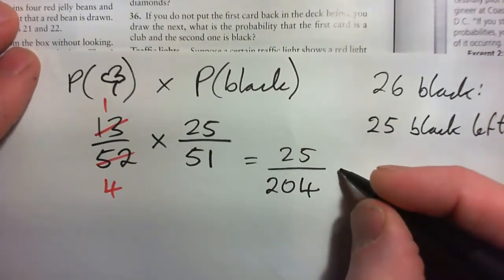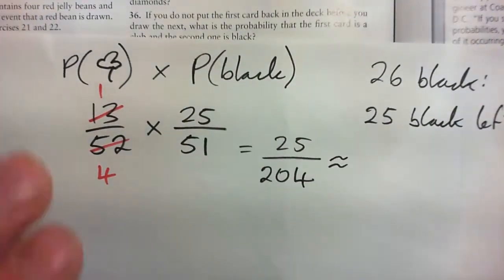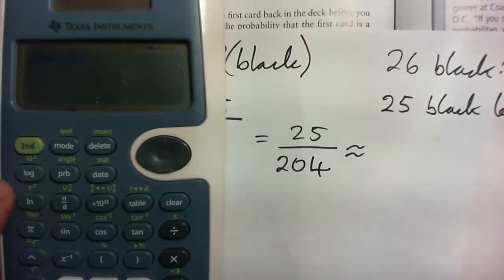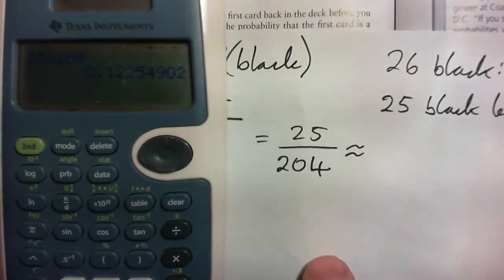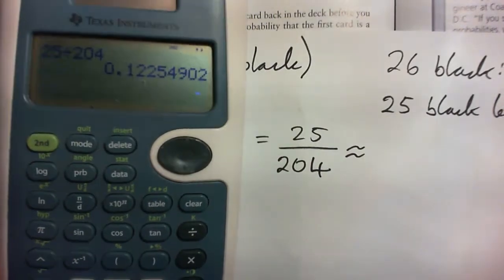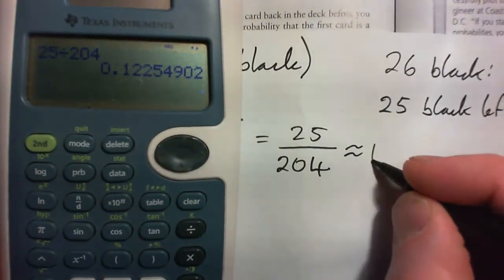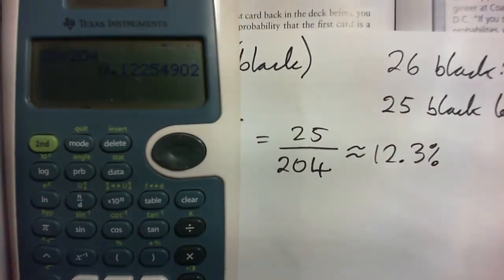And what's that as a percentage? Just for fun: 25 out of 204, it's about 12.3, about 12.3 percent, or about 12 percent really.